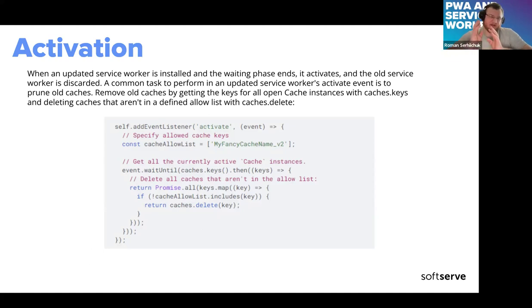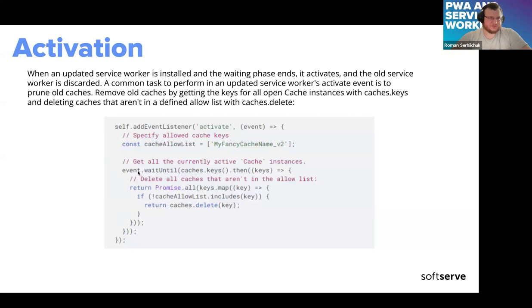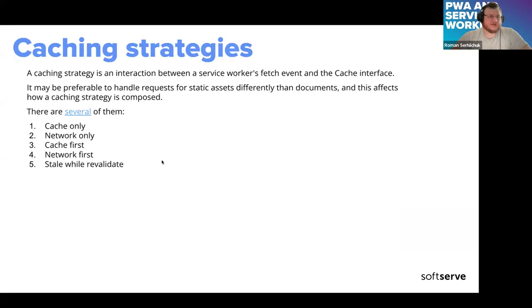In the activation step, you can add event listeners to the activate event. In this example we check the cache, see if it's valid, and delete all invalid caches. You can also add whatever logic you desire at this step — for example, notifying users that the service worker is ready, or performing other activities.